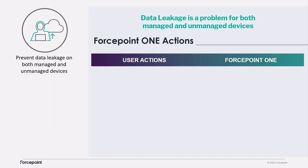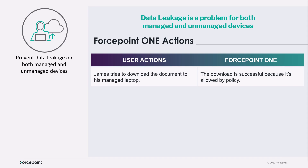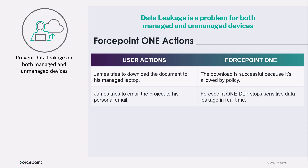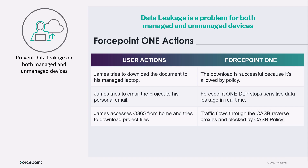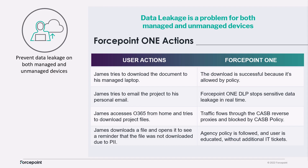Let's review what we just saw. First, James downloaded the project files to his managed laptop, which was allowed by policy. When he tried to email the project from a managed device, Forcepoint One DLP stopped it from proceeding. He then tried to access and download the project files from home for his long flight; the traffic flowed through the CASB reverse proxies and was blocked by the policy. James did download a file, but it only contained a reminder that the file was not downloaded due to its sensitive nature. Forcepoint One enabled the agency policy to be followed, the user to be educated about why their activities were blocked, and all this was done without a single IT ticket.